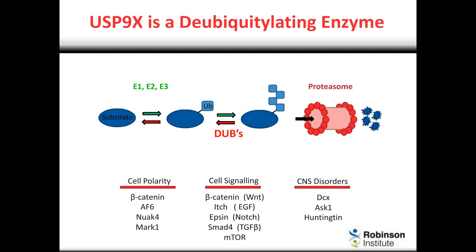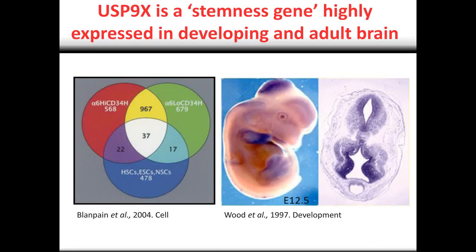So certainly an interesting gene to study. What was also known was that USP9X was identified as a stemness gene — a term used to describe genes highly expressed in stem cell populations compared to their direct differentiated derivatives. USP9X is one of 37 genes identified in a study as being highly expressed in hematopoietic, embryonic and neural stem cell populations, and also skin cell populations. This has been shown in mouse and human stem cell populations at the level of transcriptome and proteomic studies. We were also intrigued by evidence that in the developing brain, USP9X was highly expressed by in situ hybridization in the progenitor cells.